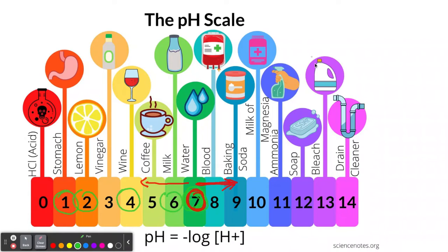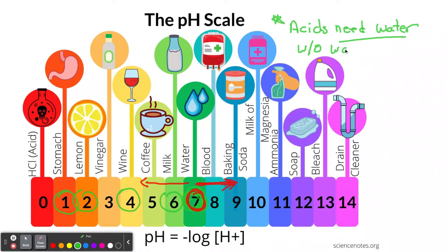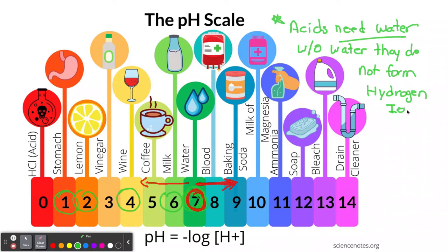The thing about acids is that acids need water — that's really a key point. Without water, they do not form hydrogen ions. And that's the key: hydrogen ions. If you're not forming hydrogen ions, then the acid will be useless. So let's look at some acids.